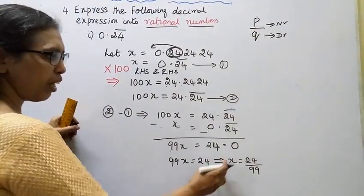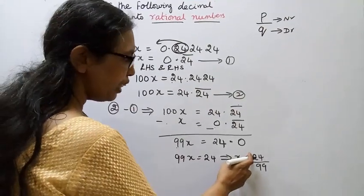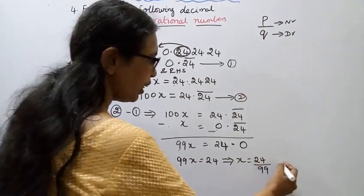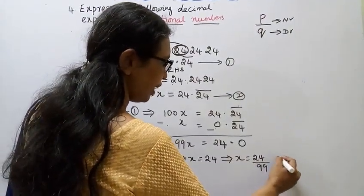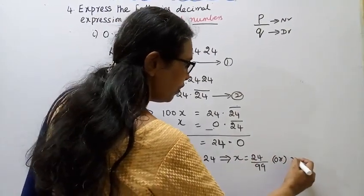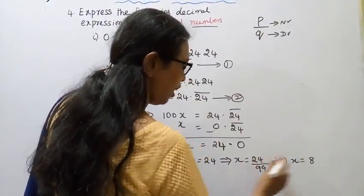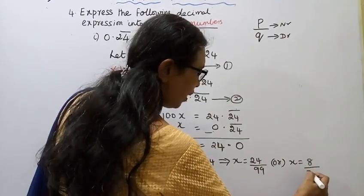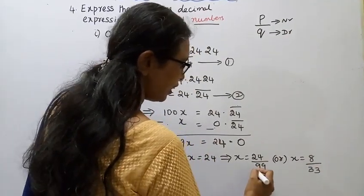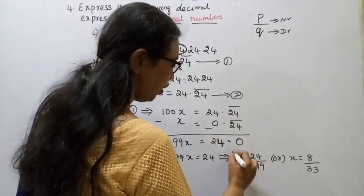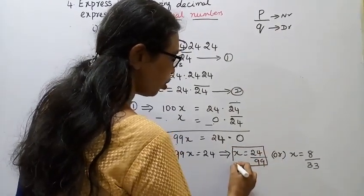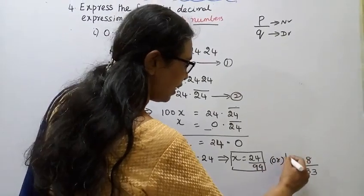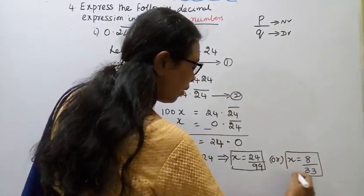x equals 24 by 99. This is the answer. Cancel by 3, 8 into 3 is 24, 33 into 3 is 99. Then x equals 8 by 33. This is the answer.